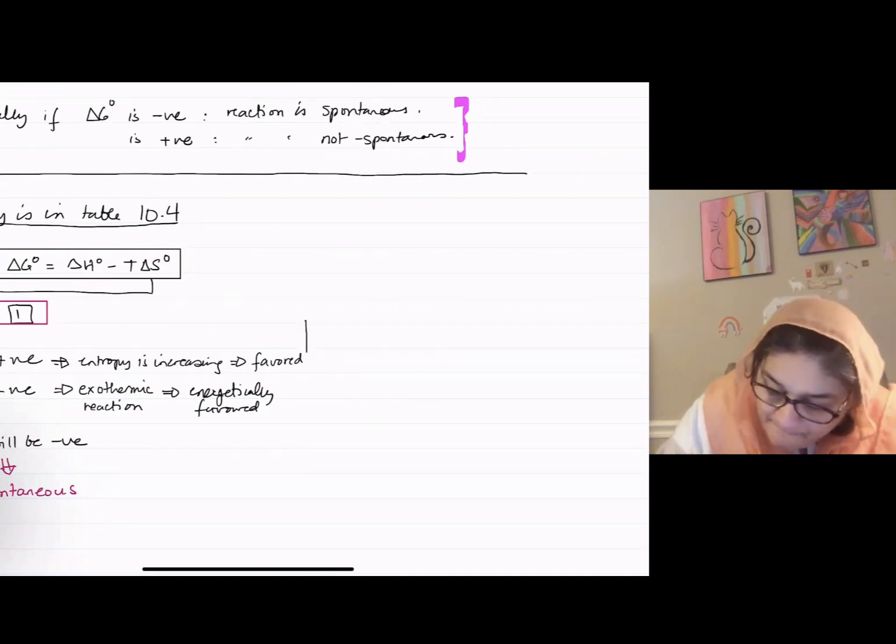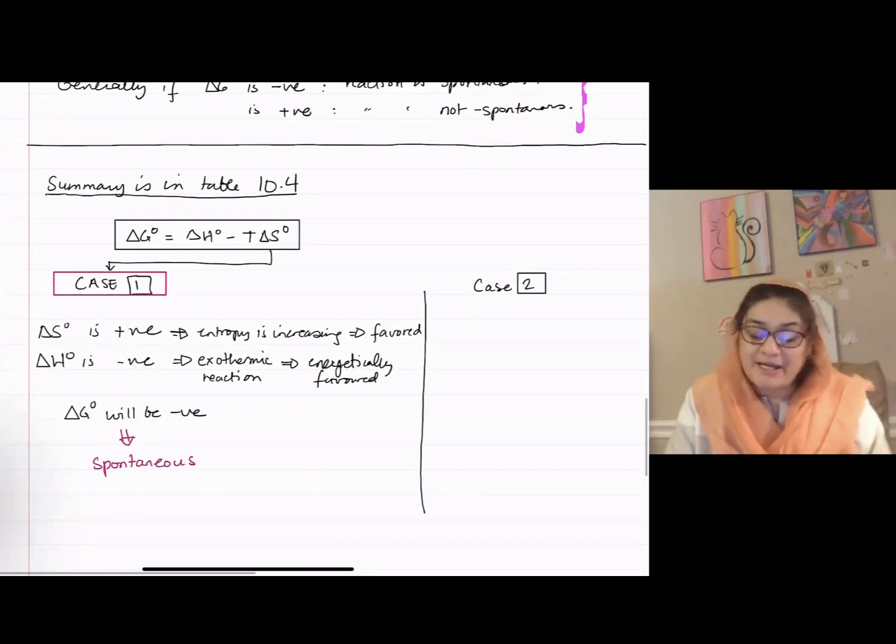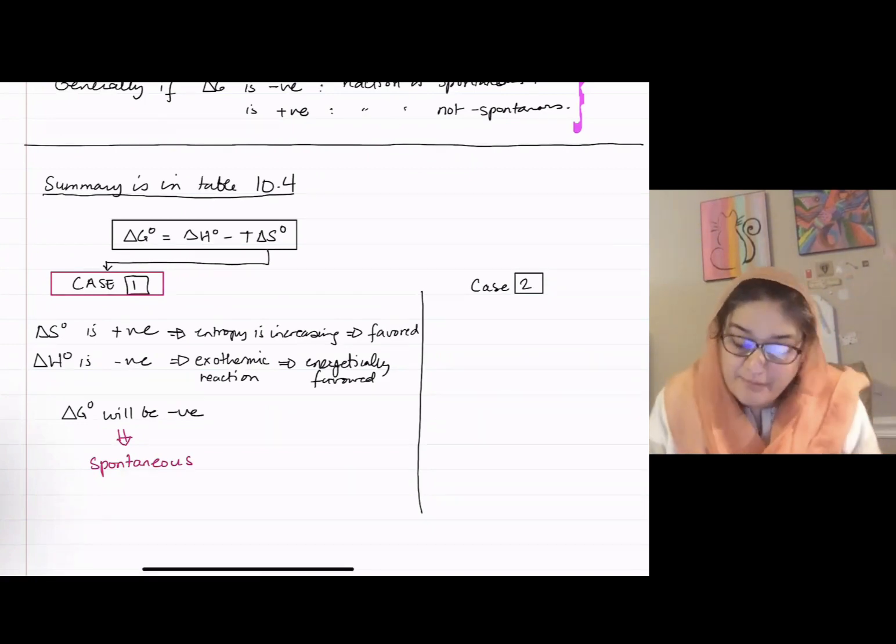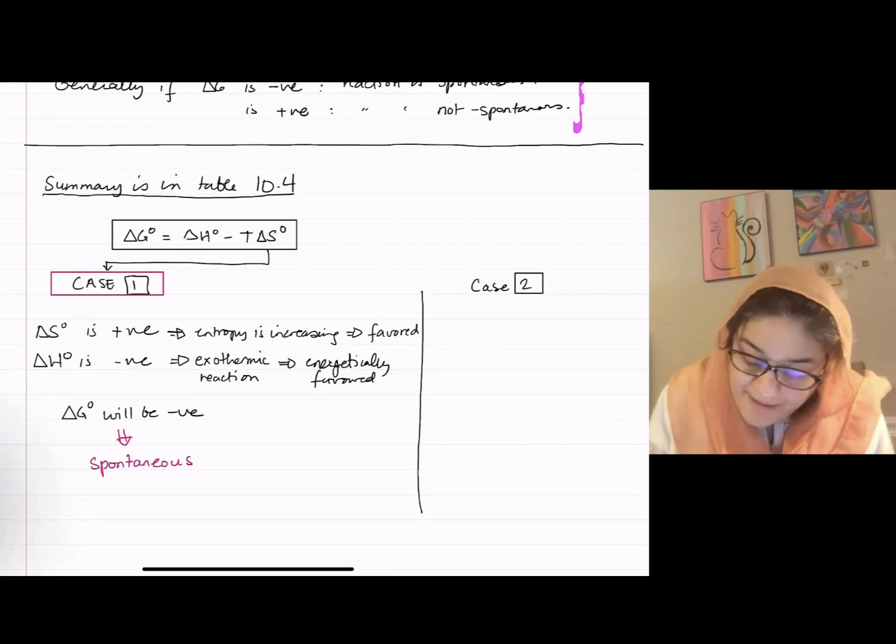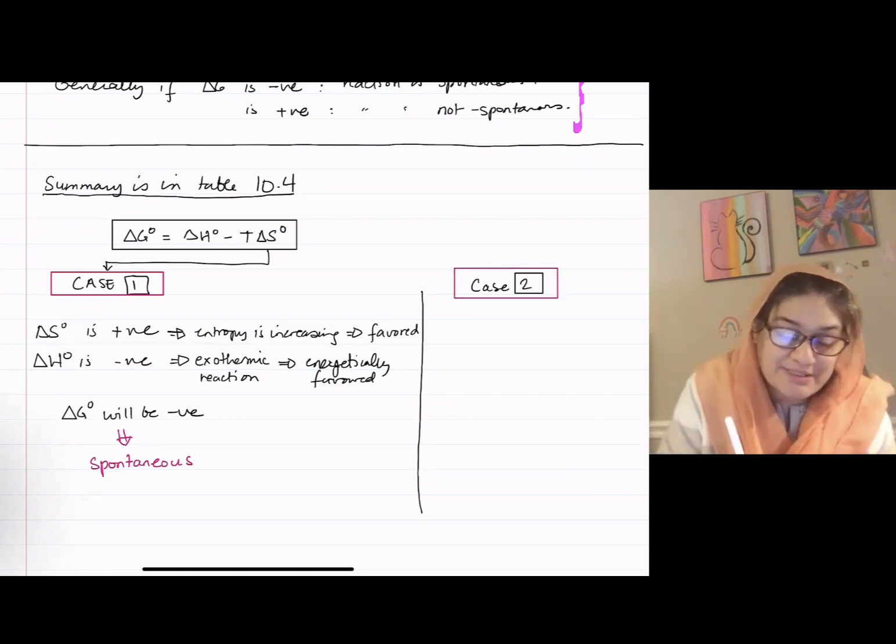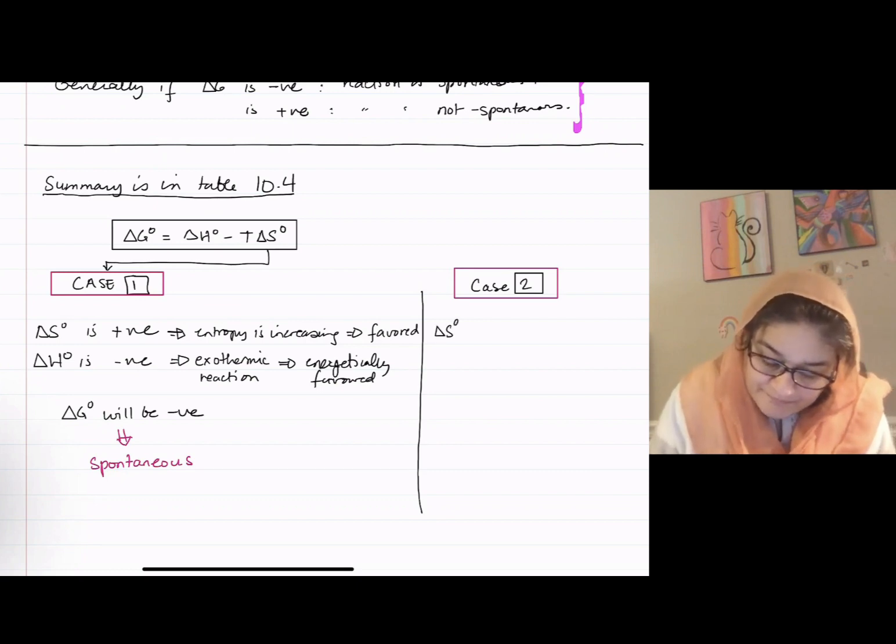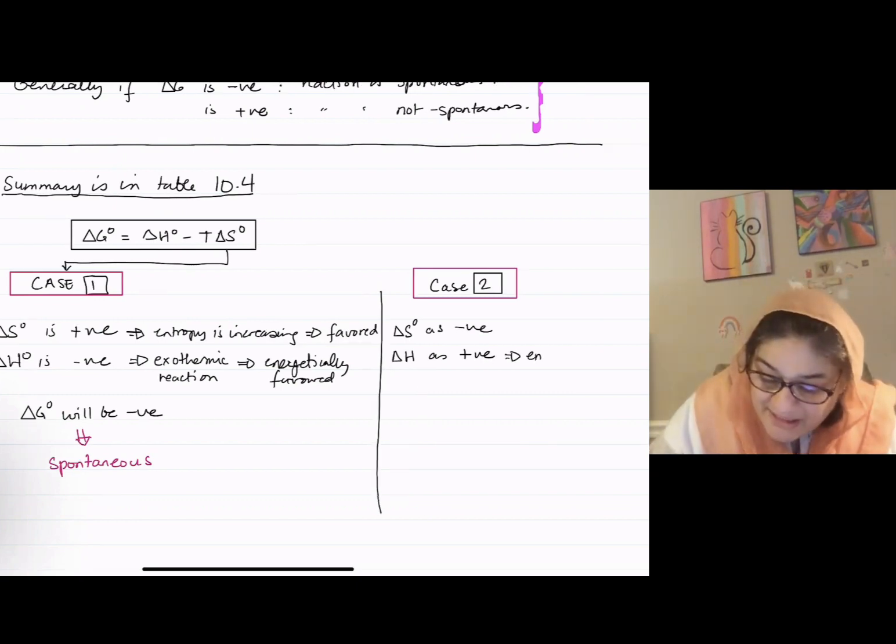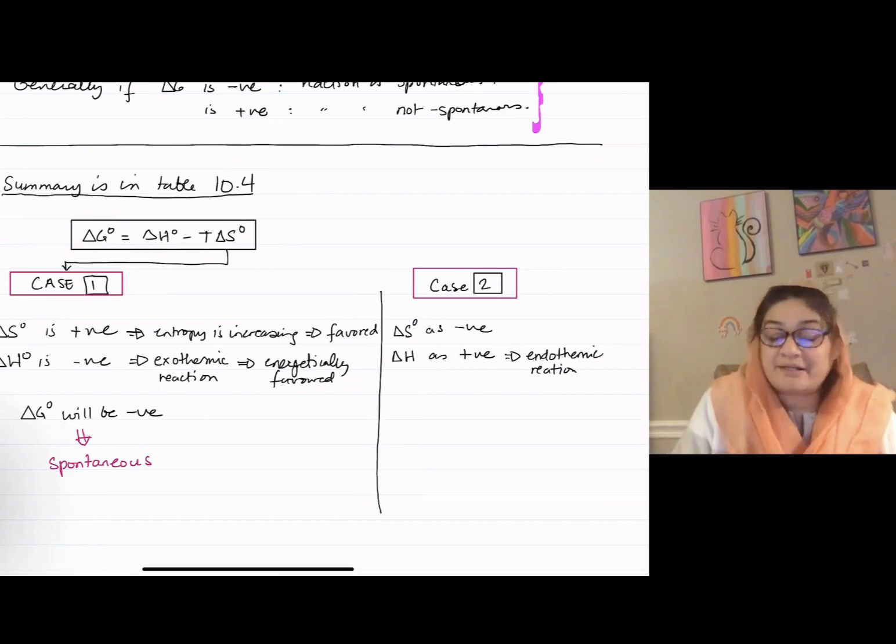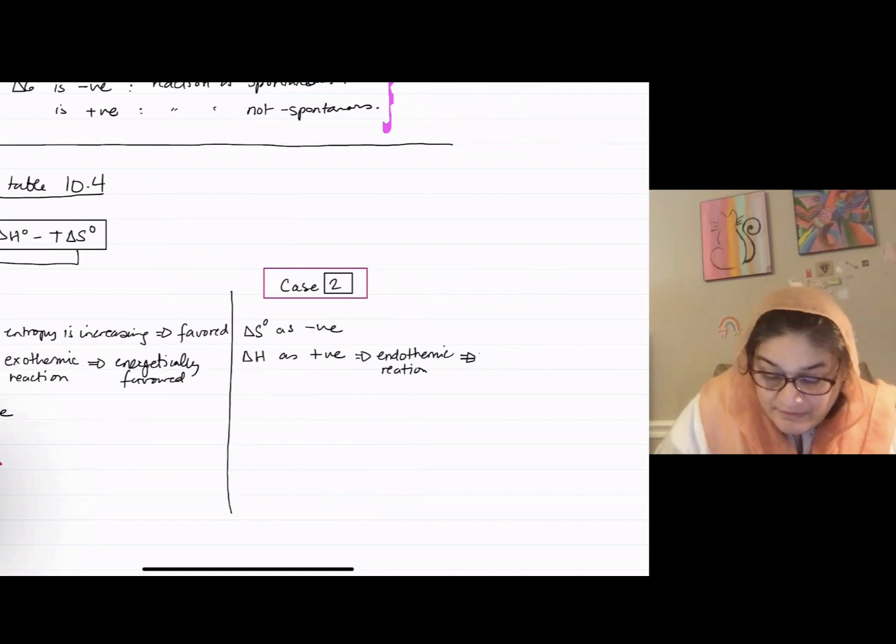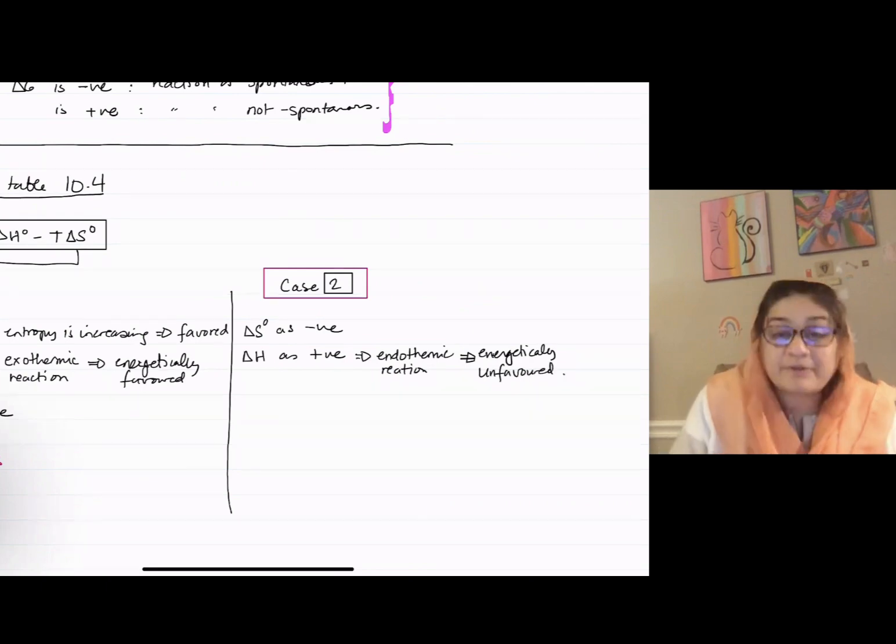Case two. In this case, I had my ΔS as positive and ΔH as negative. Now, in case two, what if I have ΔS as negative and ΔH as positive? ΔH as positive means it's an endothermic reaction. Will that be energetically favored or unfavored? It's energetically unfavored.